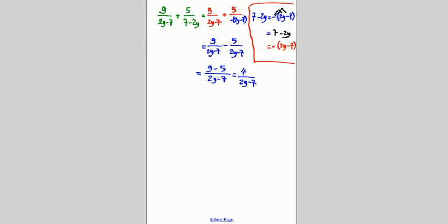Let's look at the question all together. In the beginning: 9 over 2y minus 7, plus 5 over 7 minus 2y. We rewrote the second denominator as the first, and noticed that 5 over negative 2y minus 7 means we move the negative in front of the fraction. It becomes 9 over 2y minus 7, subtract 5 over 2y minus 7, giving us 4 over 2y minus 7.